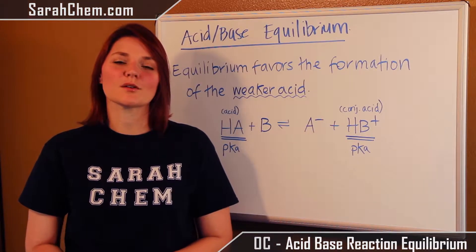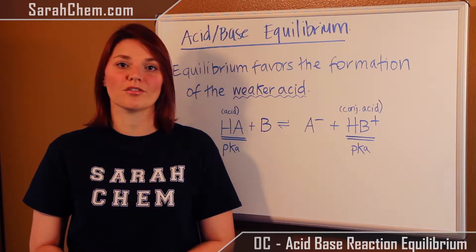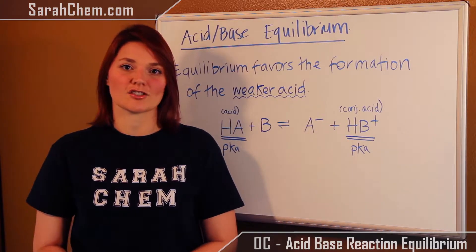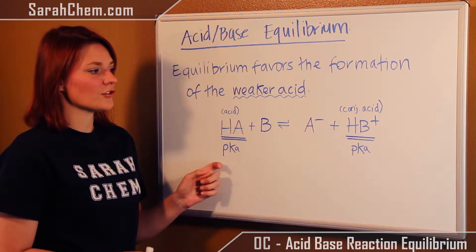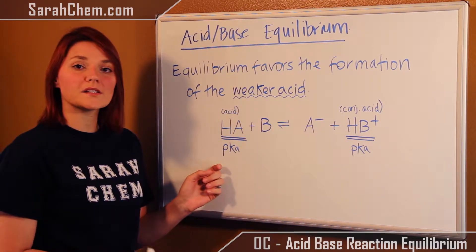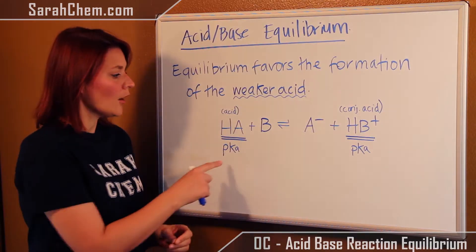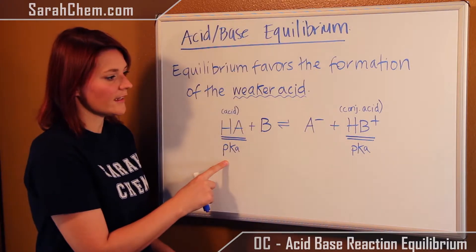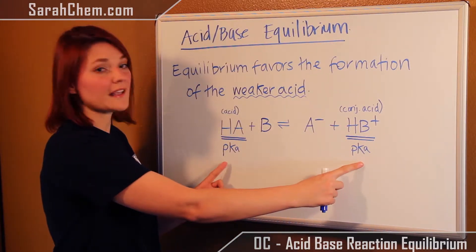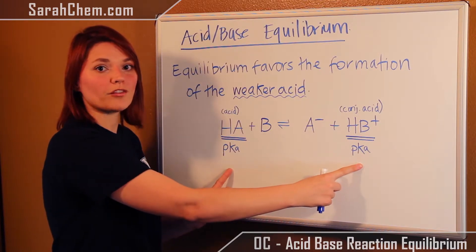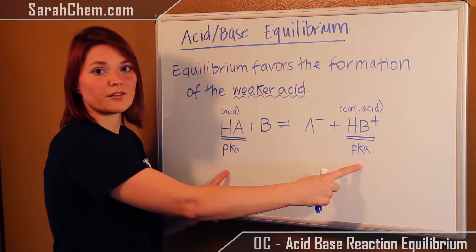Hi everyone. This is a video tutorial to help you understand how to predict which side equilibrium will favor in an acid-base reaction. The basic idea is that equilibrium always favors formation of the weakest acid. The acids we compare are the acid on the reactant side and the conjugate acid on the product side — we compare their pKa's. Equilibrium will favor the acid with the higher pKa, because that is the weaker of the two acids.